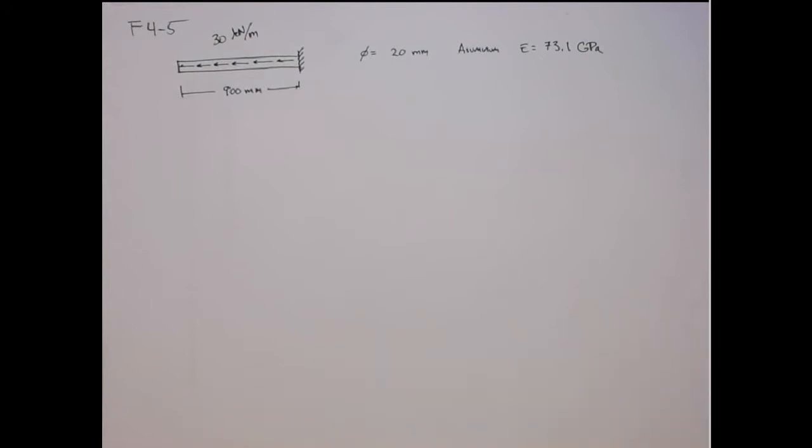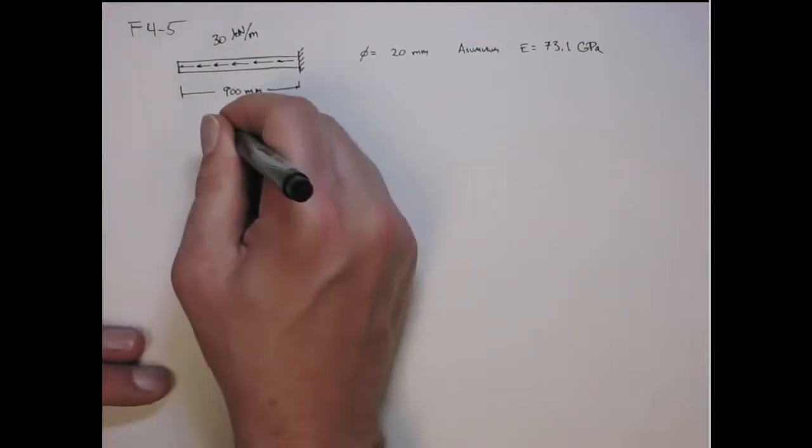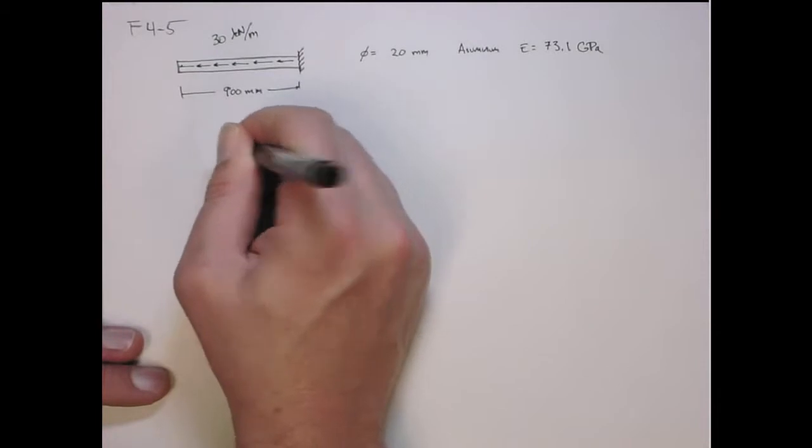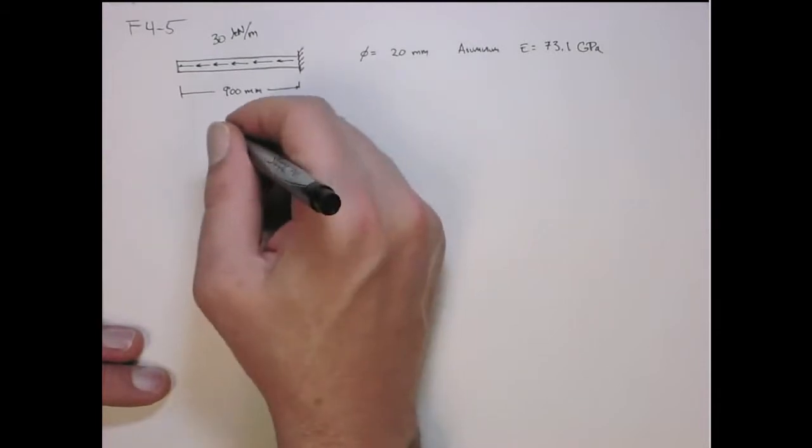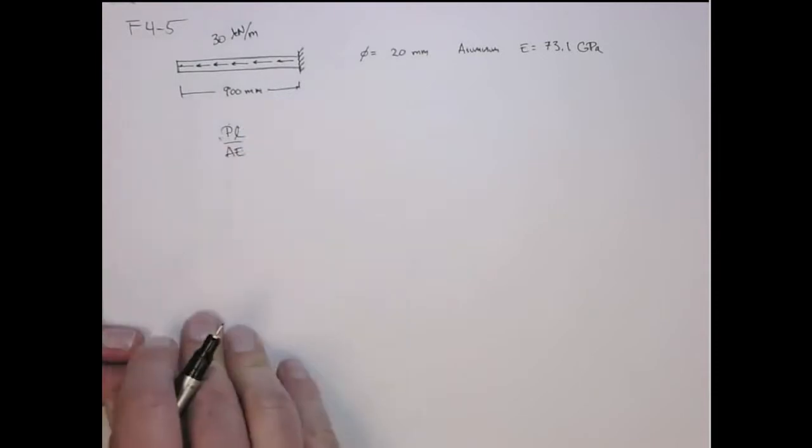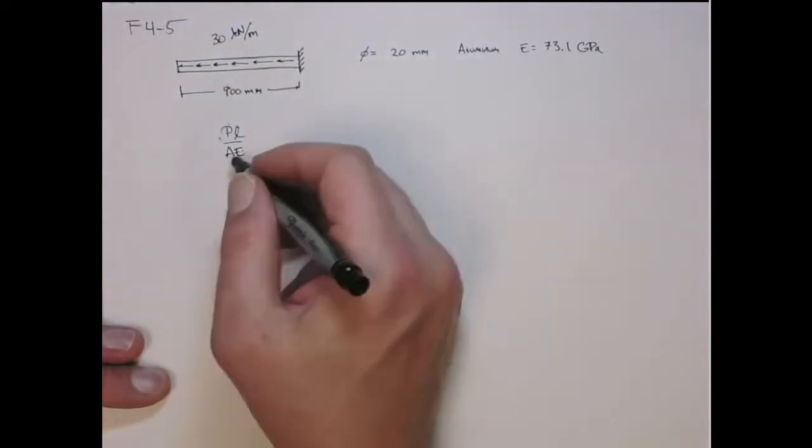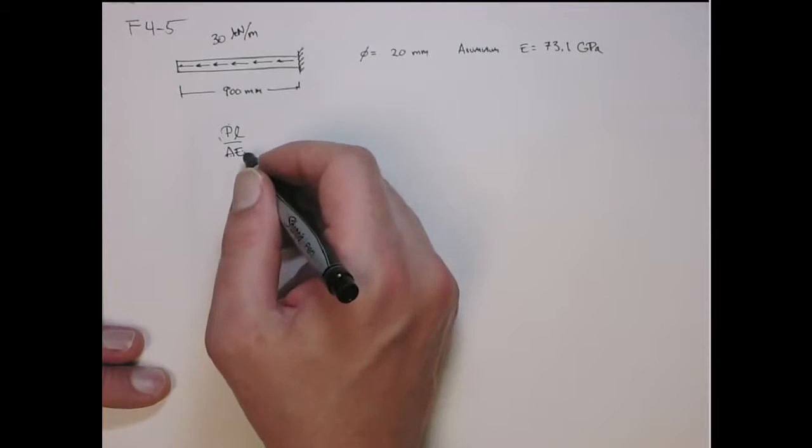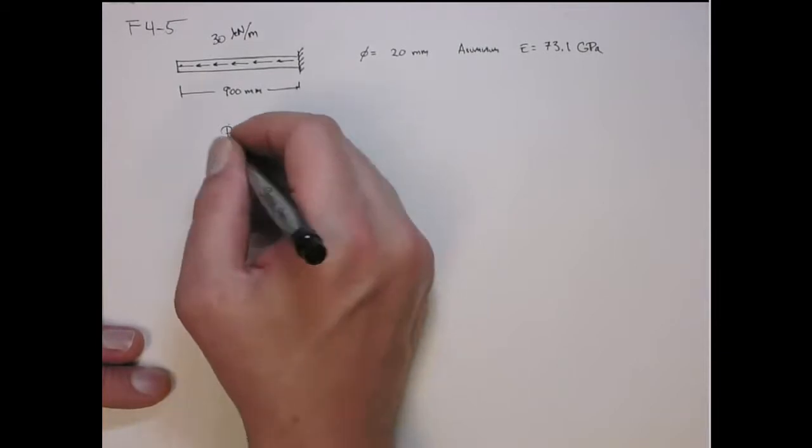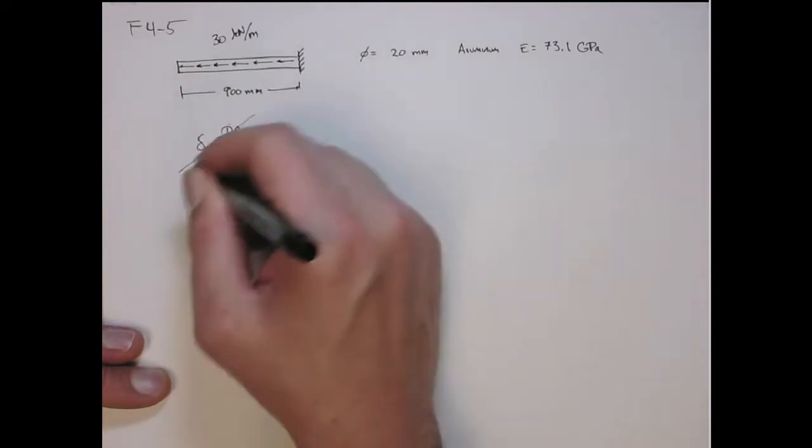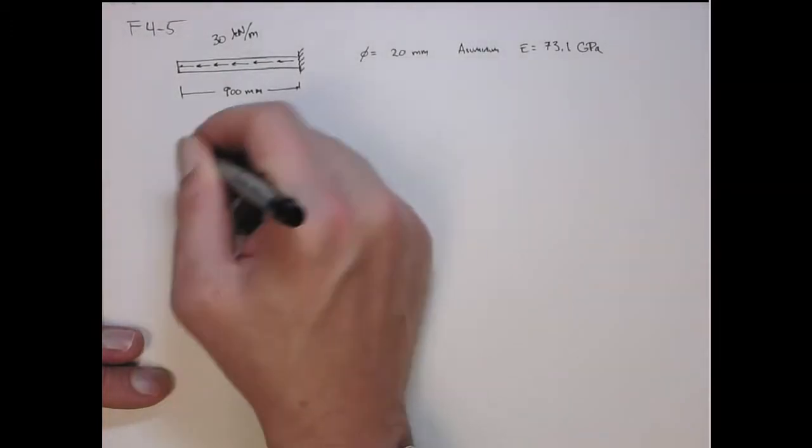So how do we do this? As I mentioned before, PL over AE only works when all these parameters are constant - when P is constant, A is constant, or E is constant. We can use this equation to get the total elongation. But in this case, P is not constant, so this equation does not work. We can't use that.